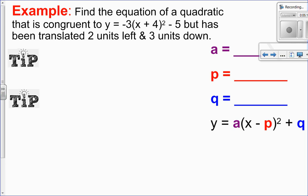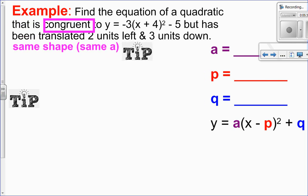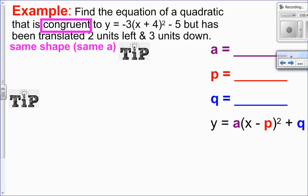In this one here, we're going to find the equation, not with the graph, but with some information. So I want to find the equation of a quadratic that is congruent to Y equals negative 3, X plus 4 squared minus 5, but has been translated 2 units left and 3 units down. So first of all, let's talk about this word congruent, what it means. So congruent means it has the same shape. So it has the same shape, which means it has the same A. So looking at this here, we'll say that A is negative 3. So congruent means it has the same shape.